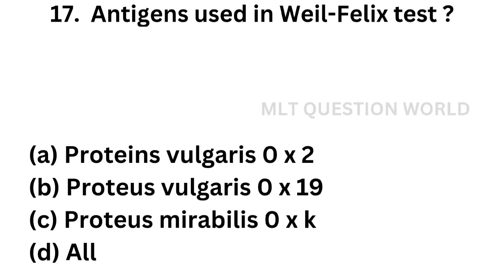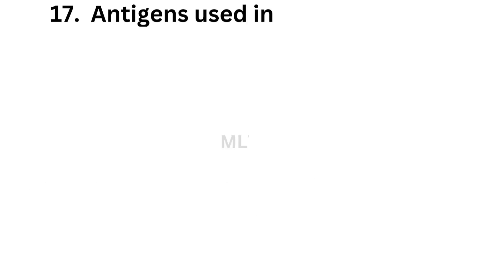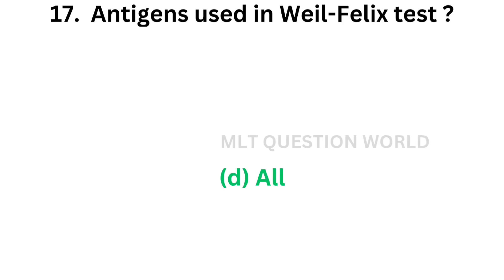Question number 17. Antigens used in Weil-Felix test: Option A, Proteus vulgaris OX2; Option B, Proteus vulgaris OX19; Option C, Proteus vulgaris OXK; Option D, all of the above. The correct answer is Option D, all of the above. All the following antigens are used in Weil-Felix test.